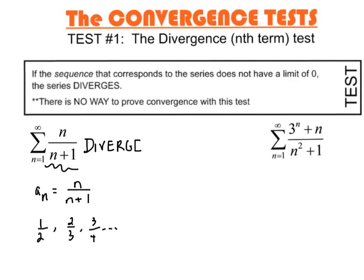So, any time the sequence has a limit that's not 0, and remember, the limit of this particular sequence is 1, any time that happens, we end up with a divergent series. Unfortunately, there's no way to prove convergence with this. All this does for us is, does it diverge? And if we can't prove that it diverges, we are going to end up having to do more work.